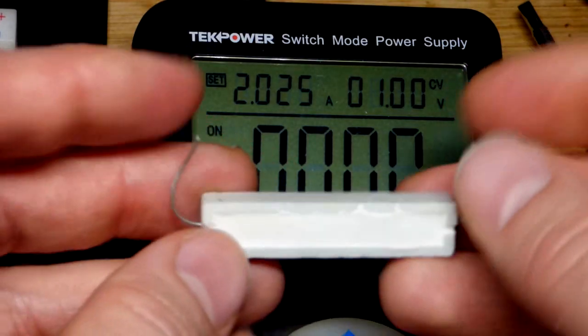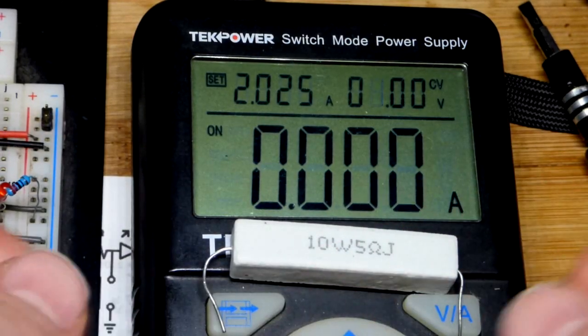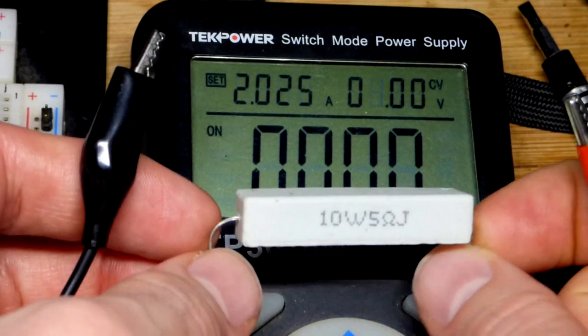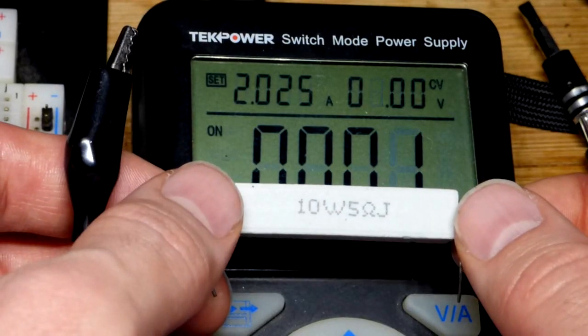So this is useful when I want about one amp of current. We put one amp of current through here, we got to put five volts across it.